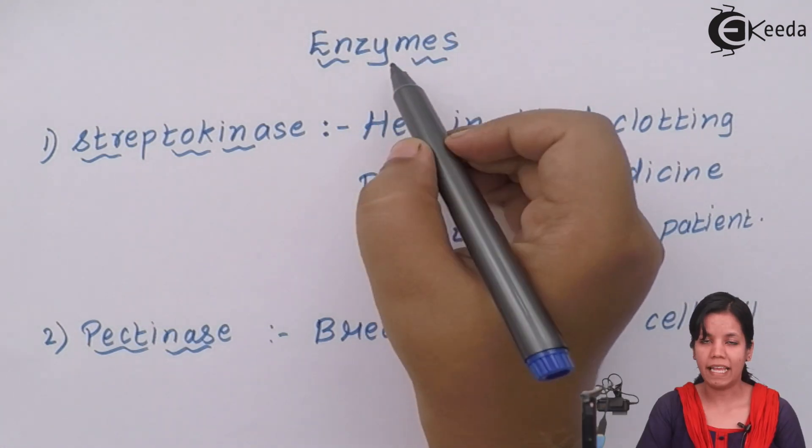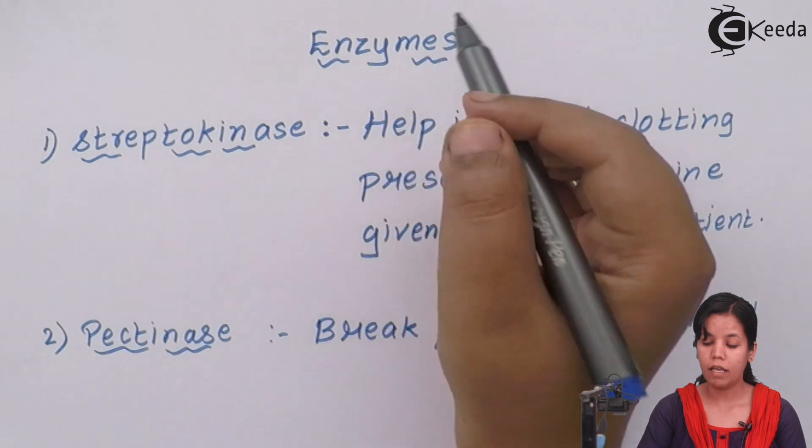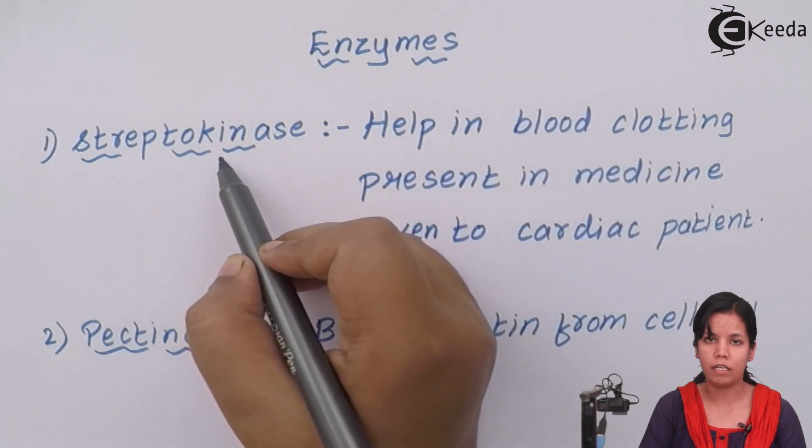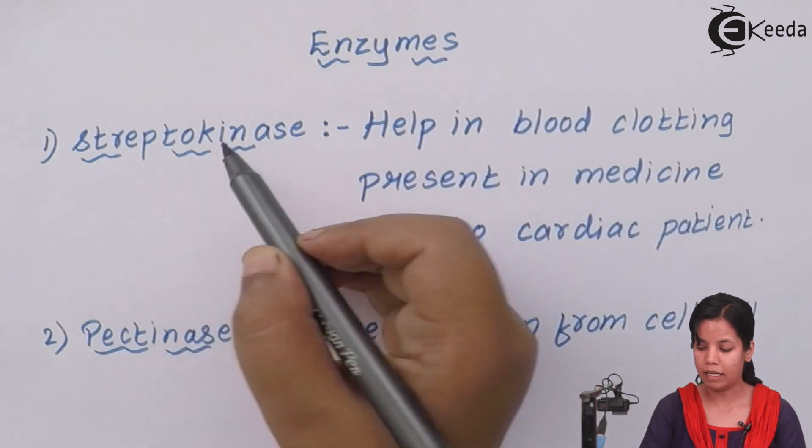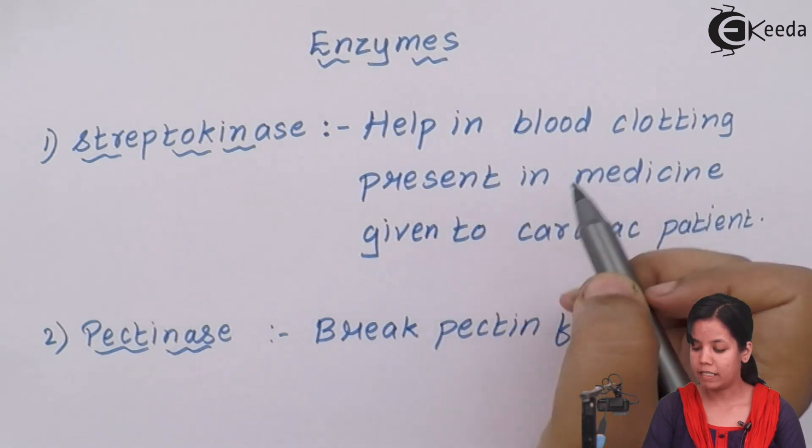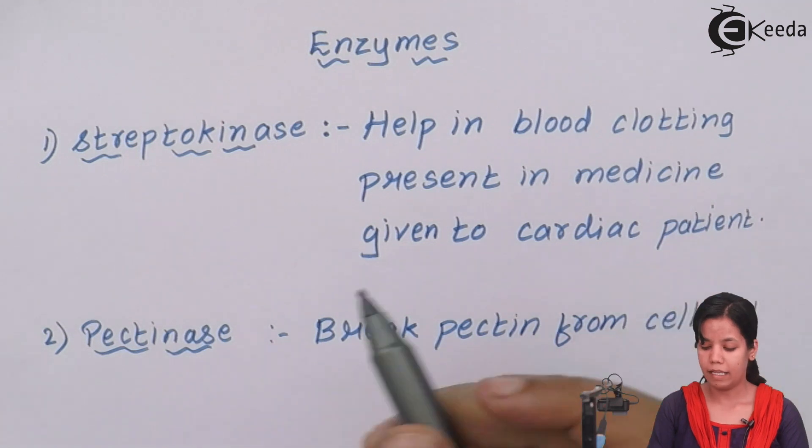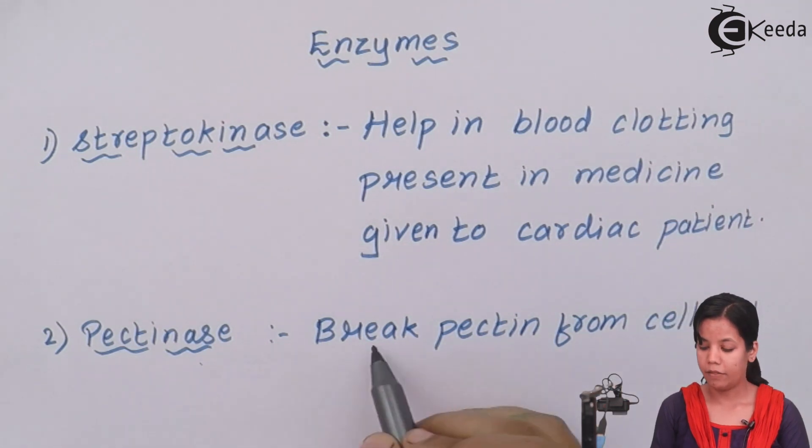Now we will be studying about enzymes which are produced using microbes as well as industrial products. The first enzyme is streptokinase. Now this enzyme streptokinase helps in blood clotting. It is present in medicines given to cardiac patients or people suffering from myocardial infection take medicines in which streptokinase is present.